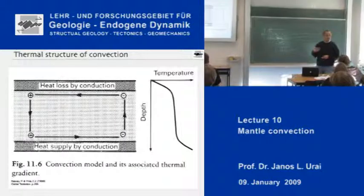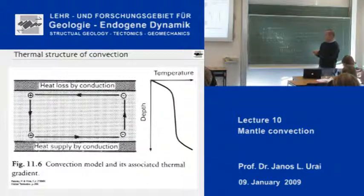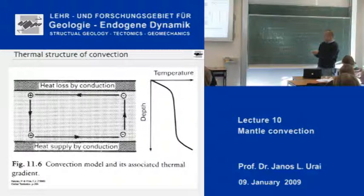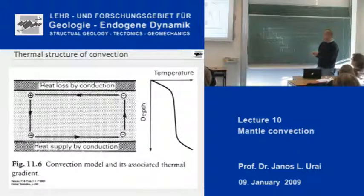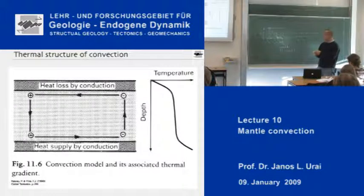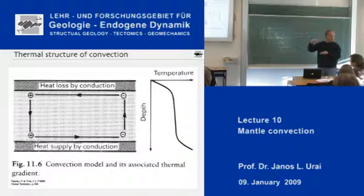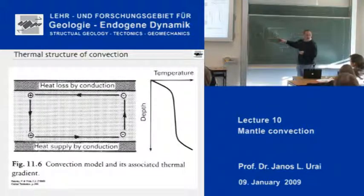Basically, in the model I've shown you until now, there is still whole mantle convection — material is going up, moving sideways, and going down. At the top, the heat loss is by conduction — this is the thermal boundary layer, which is the upper part of the lithosphere. And at the bottom, at the contact between the core and the mantle, there is again conduction. So there is a much more isothermal central part with these two thermal boundary layers.